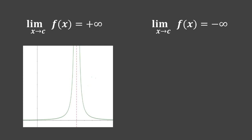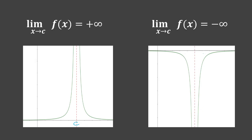For positive infinity, in reference to the given graph, let's say that this vertical asymptote is c. And for this other graph, the vertical asymptote is also c. For the first graph, we can see that as the value of x gets closer and closer to c, f of x increases without bound. And for the second graph, as the value of x gets closer and closer to c, f of x decreases without bound.